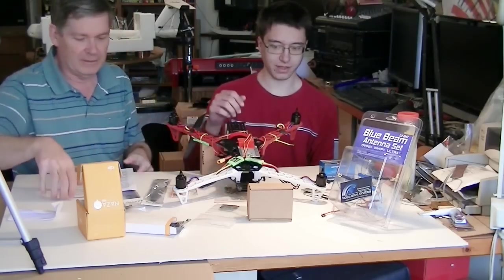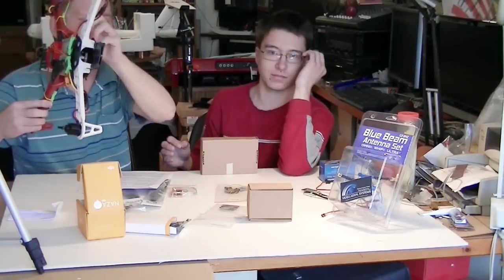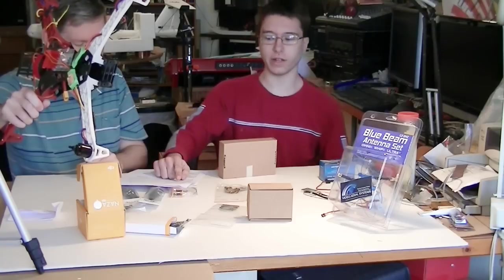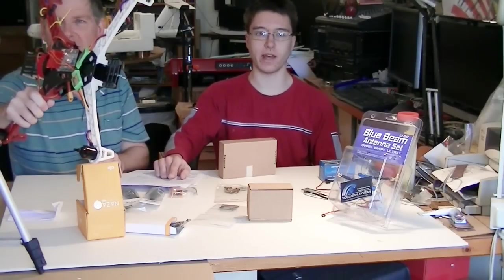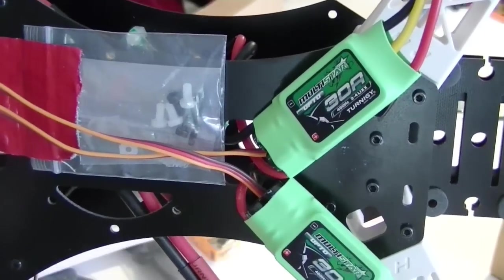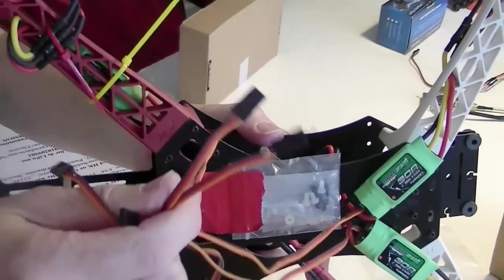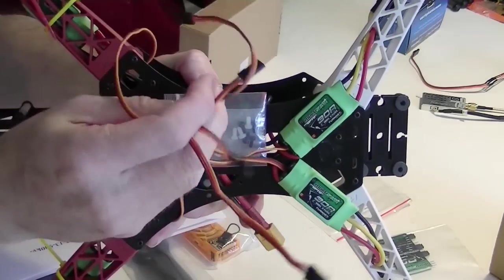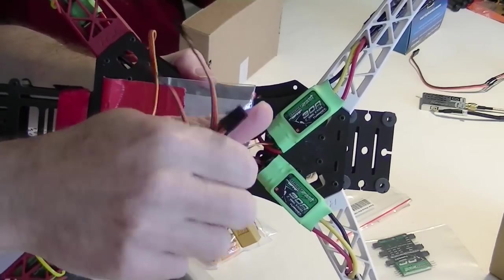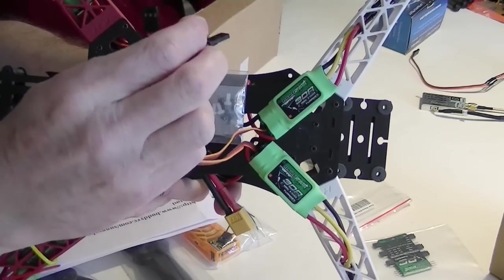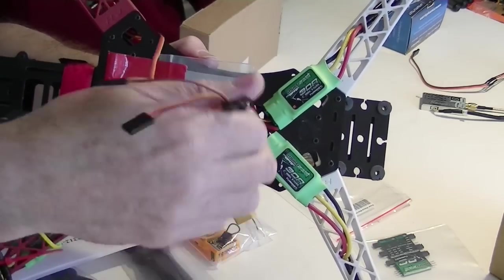The next thing we got is the ESCs. Now, here they are right here. And again from Hobby King. Those are Hobby King. So, it is 4X turn-g, multi-star, 30-amp, multi-rotor, brushless ESCs, 2-4S, and they're opto, which means it doesn't have the BEC in. Which is a good thing for us, because we don't have to rewire them or anything.